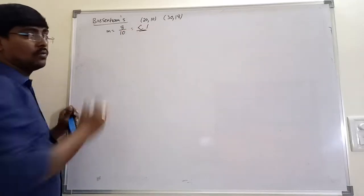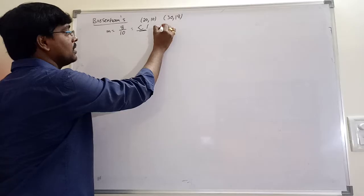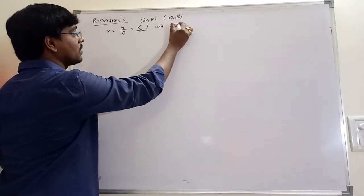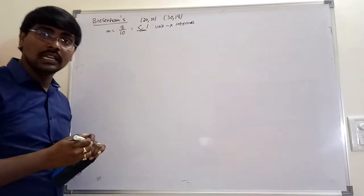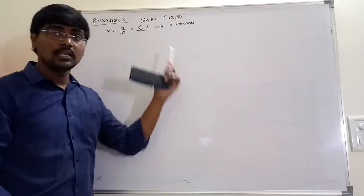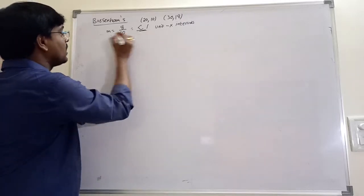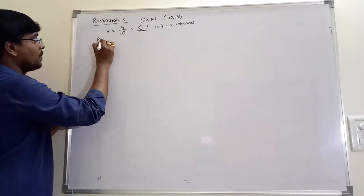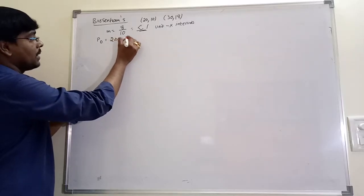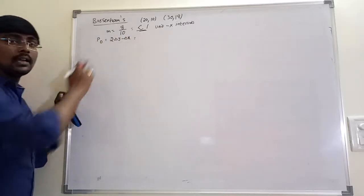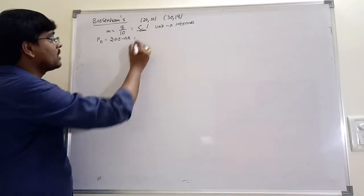Slope value is less than 1. Slope value less than 1 means unit x increment. So each time the x value is incremented by 1. Our aim is to calculate the y value. Calculate initial decision parameter P0 is equal to 2 delta y minus delta x, where delta y means y2 minus y1 and delta x means x2 minus x1.